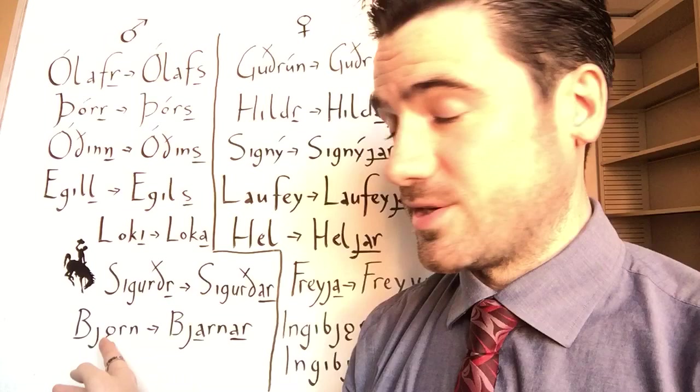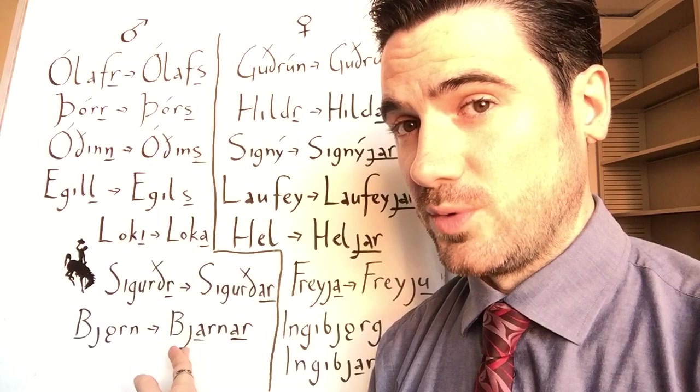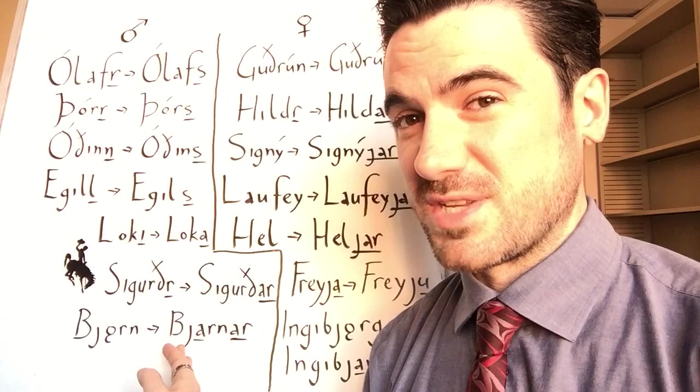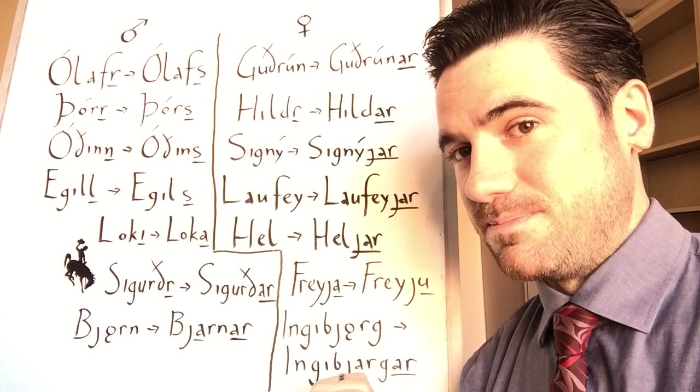This also applies to names that are compounded with Björn. So if somebody's named Thorbjörn, Thor Bear, then the possessive form will be Thorbjarnar. Note that only the second name in a compound name gets turned into its genitive form. So you don't say Thor's Bjarnar, Thor's Bear's, you just say Thorbjarnar. The same thing applies to feminine names that may have this vowel. So Ingibjörg with that vowel, the possessive form will be Ingibjargar. Same thing with other names that are formed with Björg, like Gudbjörg.